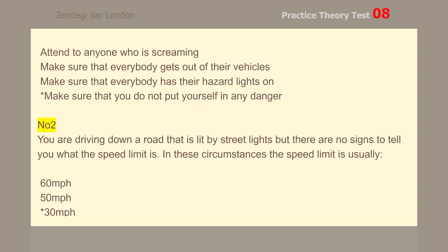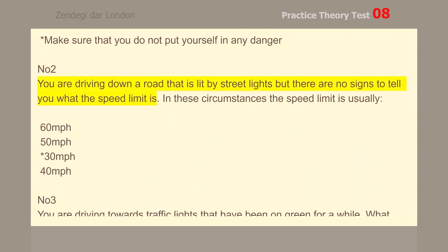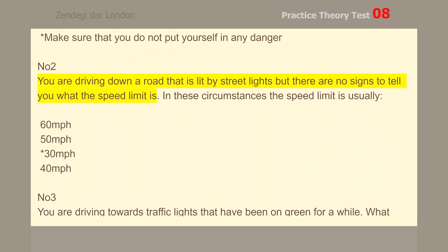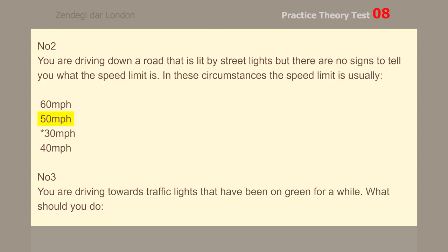Number 2. You are driving down a road that is lit by street lights, but there are no signs to tell you what the speed limit is. 30 miles per hour.